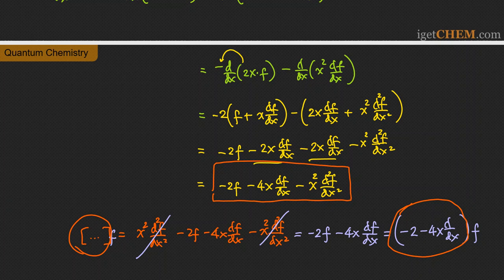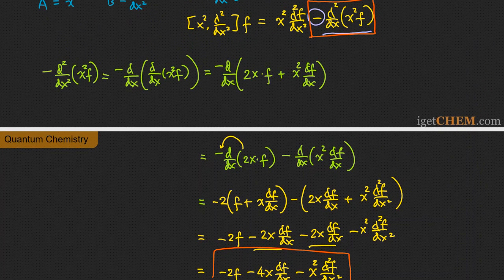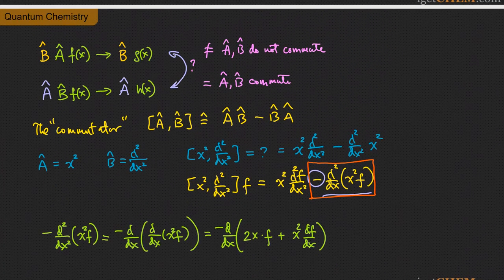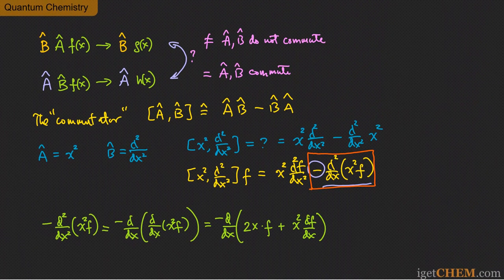That's the end of the problem. This problem is mostly just math, but the key takeaway is to understand the idea of commuting operators and what the commutator actually means. This commutator concept will show up in a number of different ways in other quantum mechanics problems. If you enjoyed this video, please consider subscribing to the channel and liking this video. Thank you.